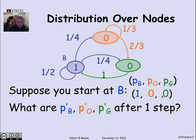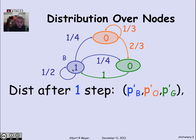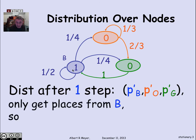I'm interested in how these probabilities update. After one step, if P-prime-B is the probability of being in state B after one step, P-prime-O is the probability of being in the orange state one step later, and likewise for green — reading off the graph, the probability of being at the orange vertex is a quarter, likewise a quarter for the green state, and a half for staying at the blue state. So the updated probabilities are one-half, one-quarter, and one-quarter.